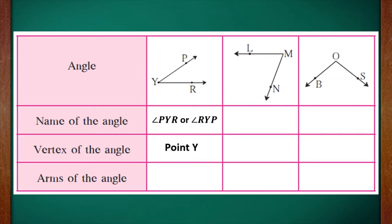The vertex of this angle is point Y. Vertex is nothing but where the two sides of the angle meet — they meet at point Y. Arms of the angle means the two sides of the angle, so side YP and side YR are the two arms. Whenever we write the names of the arms of the angle, we are supposed to start from the vertex. We cannot write PY or RY; we have to write side YP and side YR.